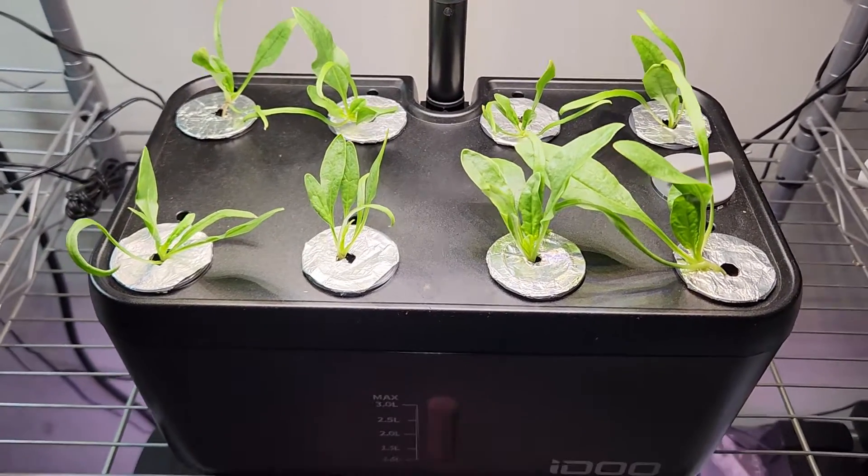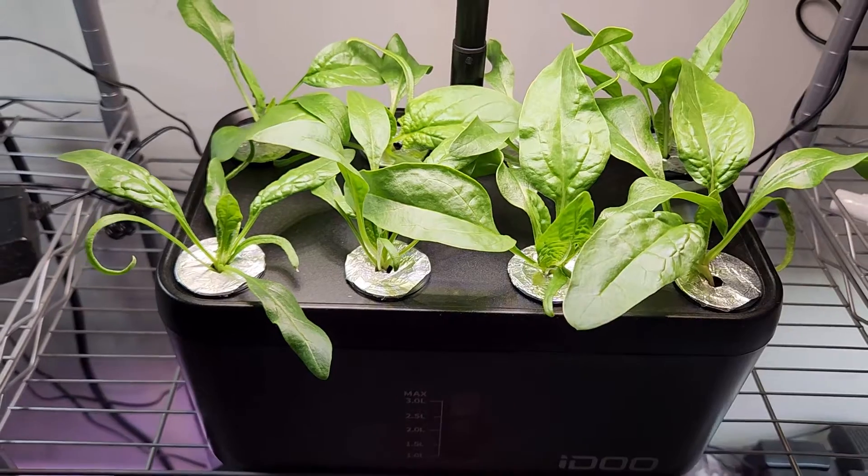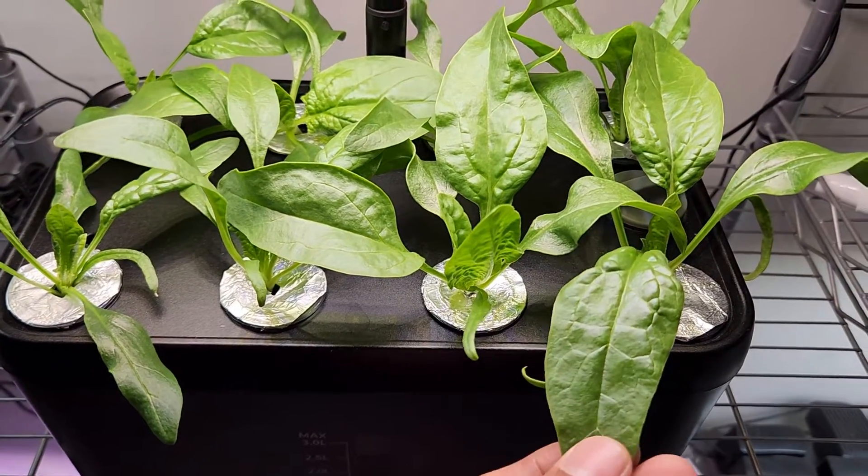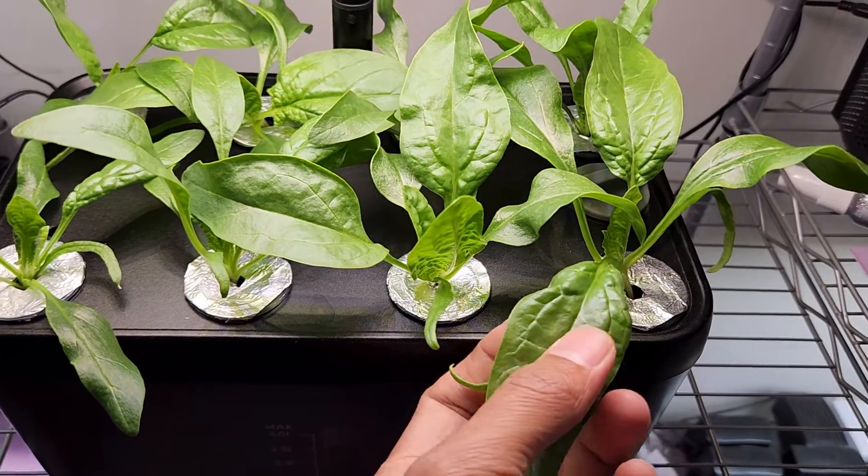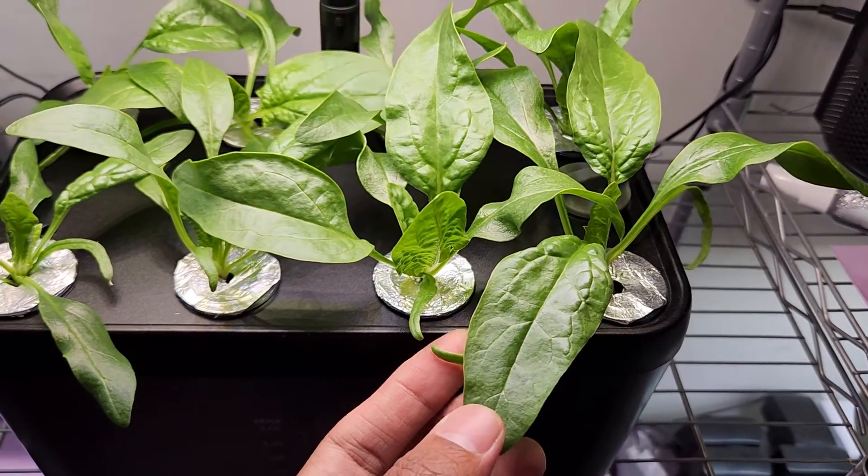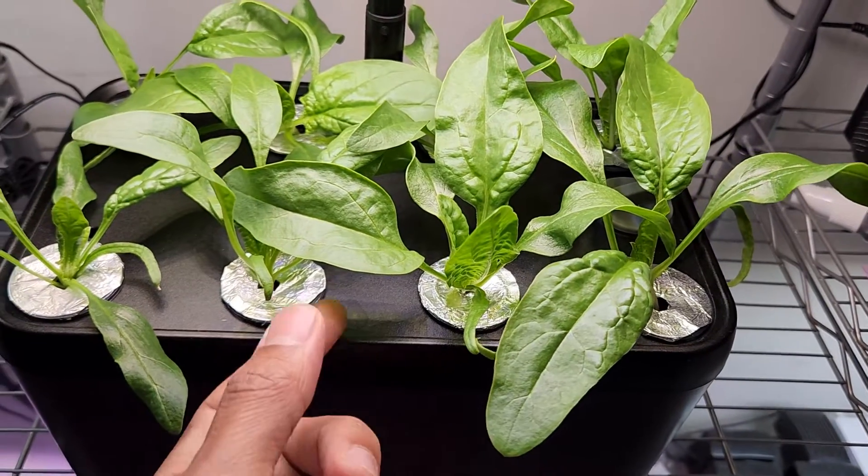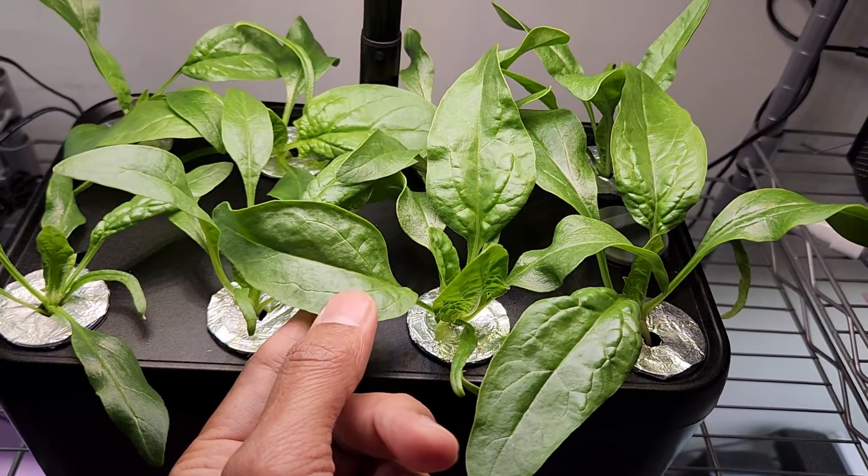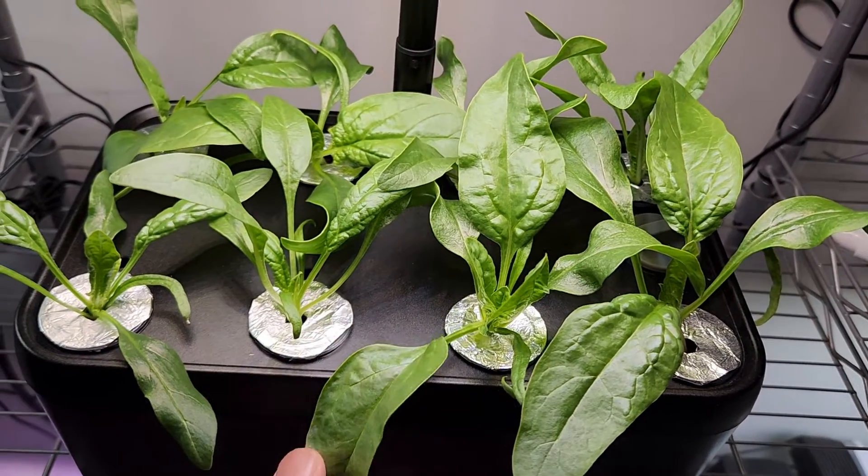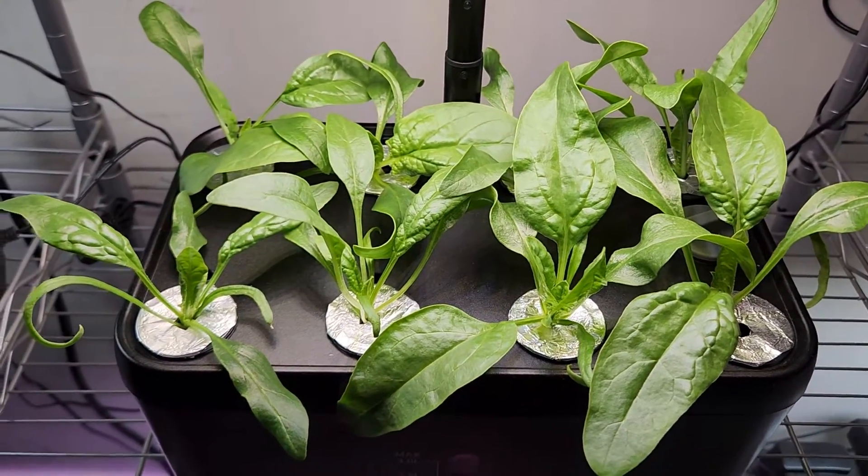Day 14. Spinach is coming excellent. Lots of leaves have reached to a decent size. If I want, I can start harvesting this baby spinach. Spinach is one of the fastest growing leafy green vegetables and this is the reason I love to grow spinach all the time. As I keep harvesting the leaves, the plants will keep on producing more leaves.